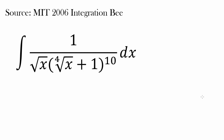Wow, that looks crazy. 1 over square root of x times 4th root of x plus 1, raised to the 10th power — that's gigantic. And we wish to integrate this crazy expression. I guess this is what some MIT students do for fun, which is understandable. This looks fun, but it's not very obvious where to start.